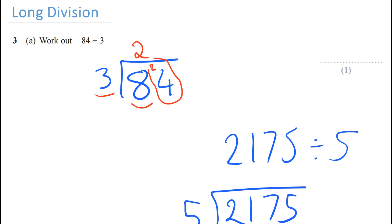2 and a 4, 24. How many times does 3 go into 24? Well 3 times 8 is 24. So you put the 8 up here. So the answer here would be 28. So the answer to the question would be 28.